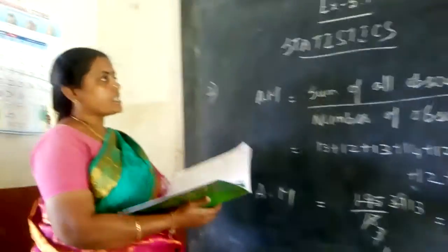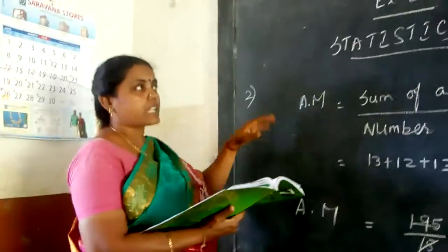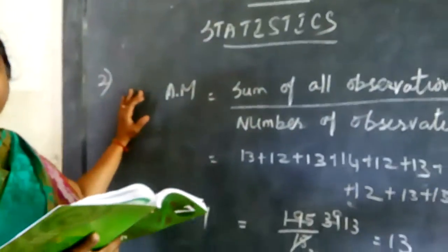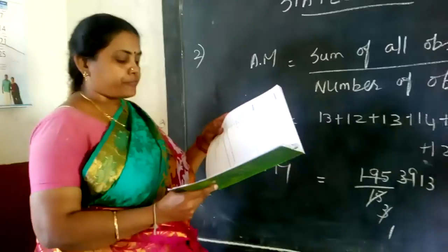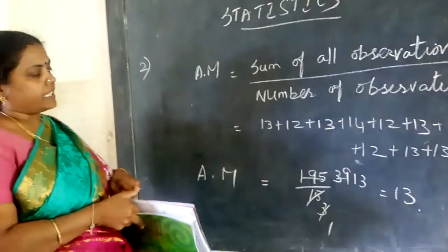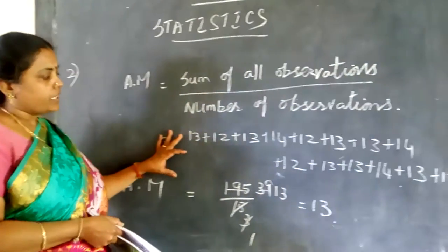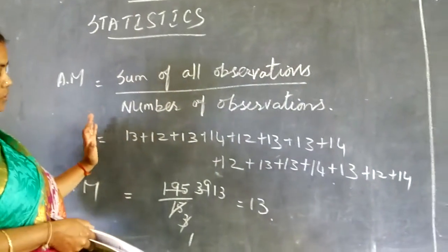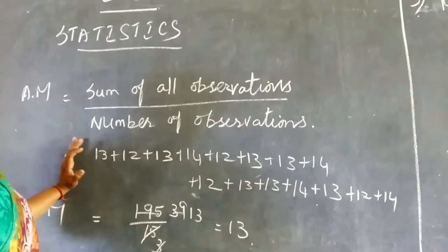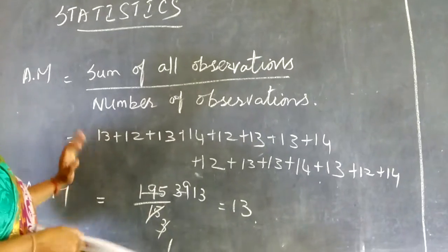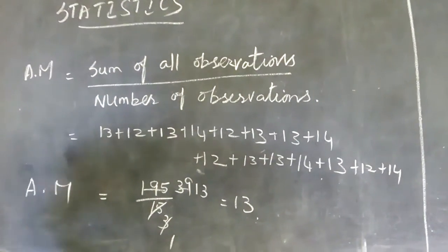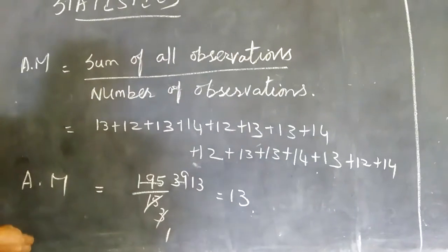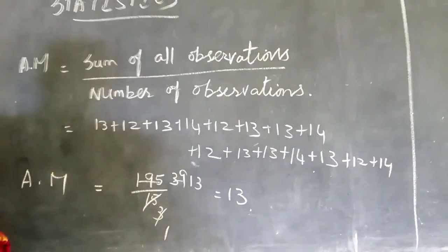Morning students. Today we are going to see the new chapter Statistics, which falls on exercise 5.1. Ages of 15 students of 8th standard has been given here. So now the question is to find the mean age of this.